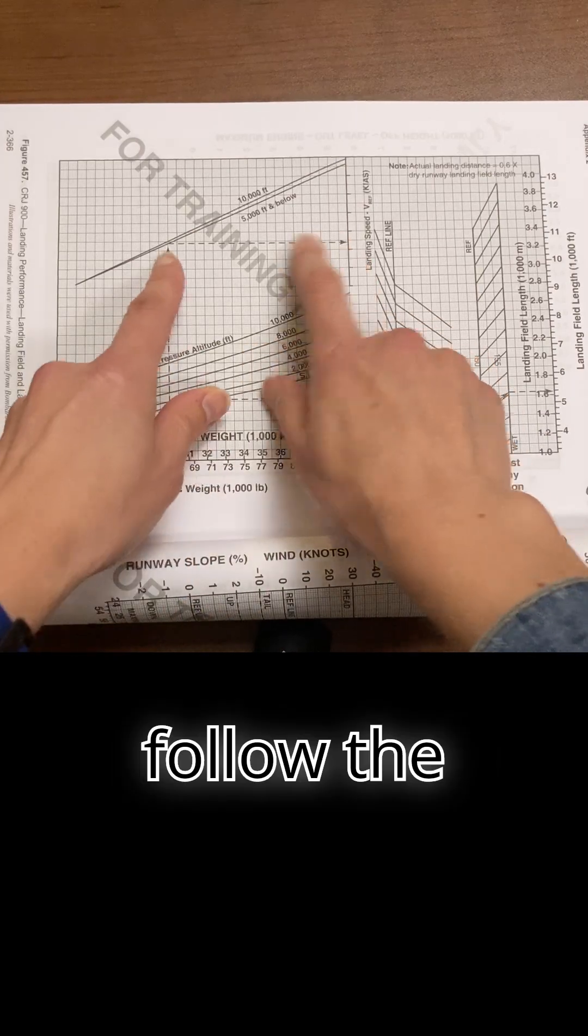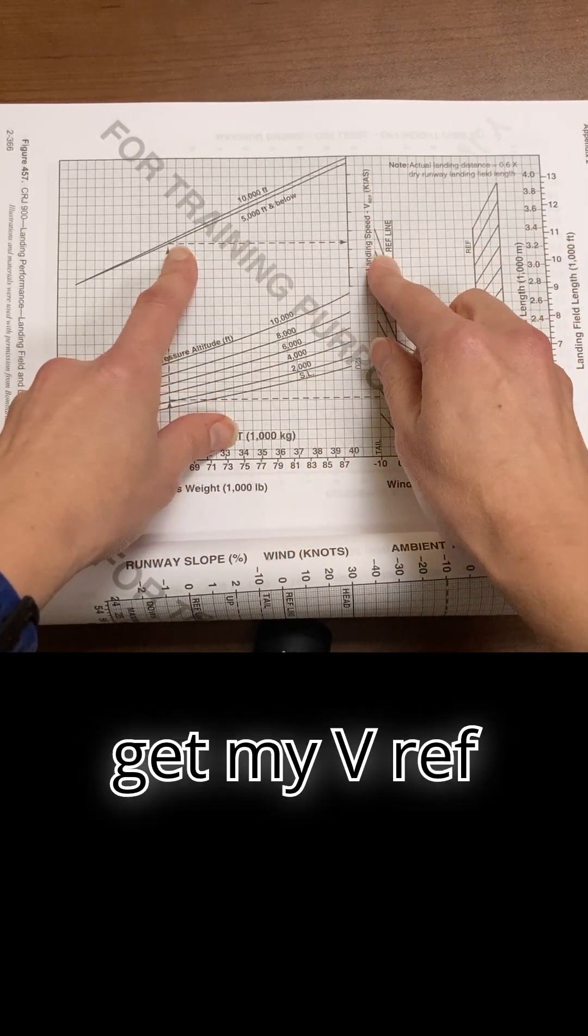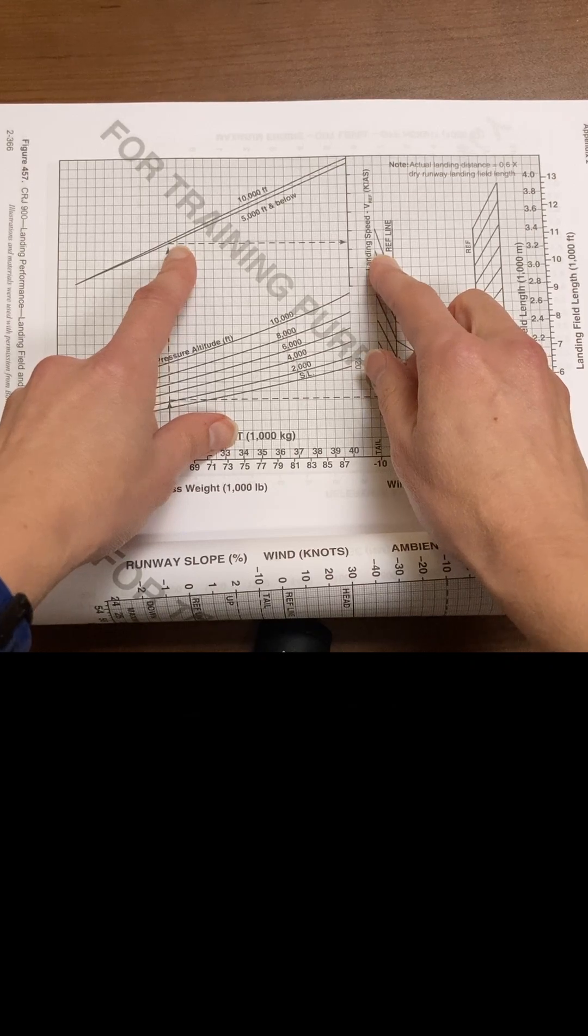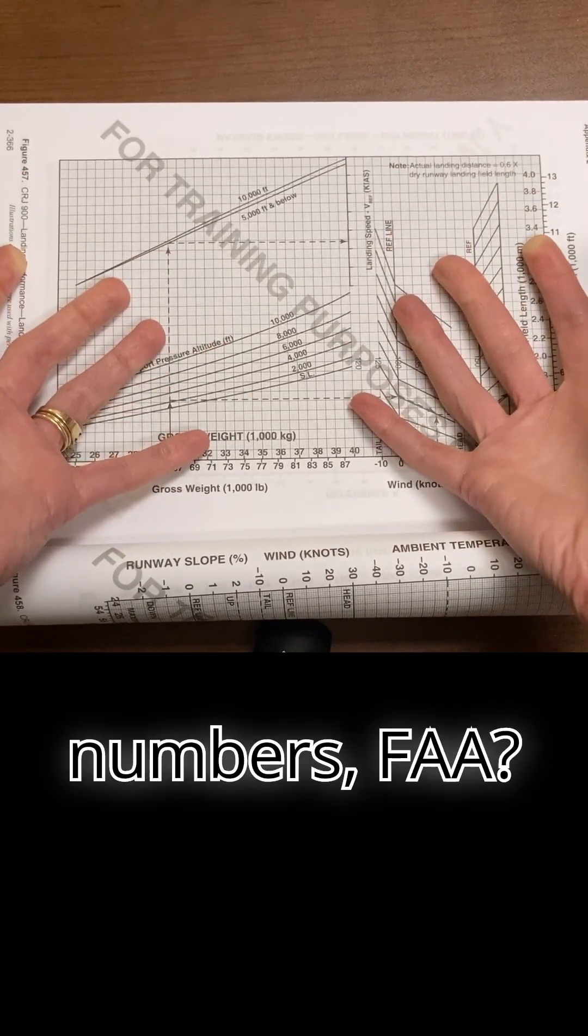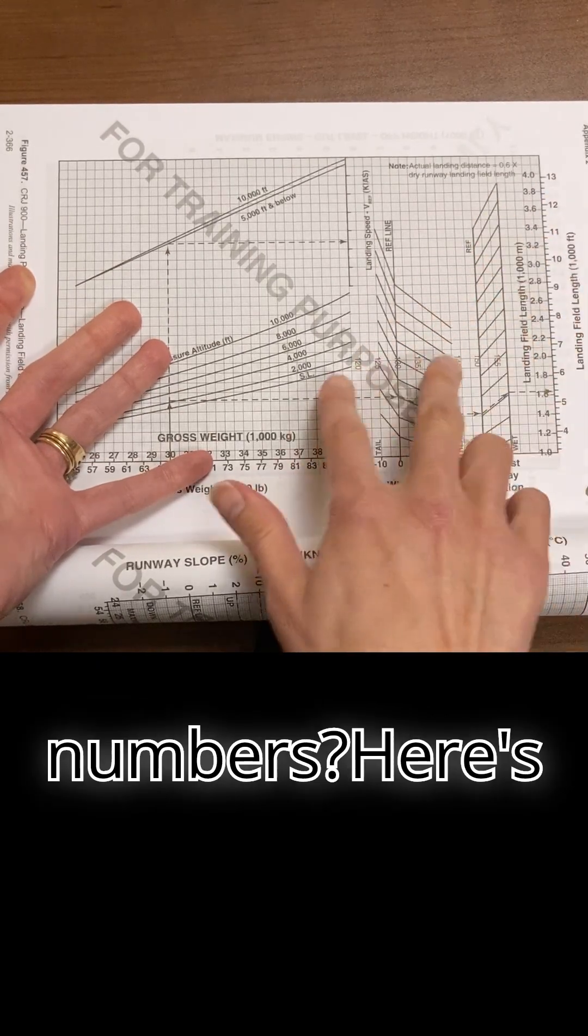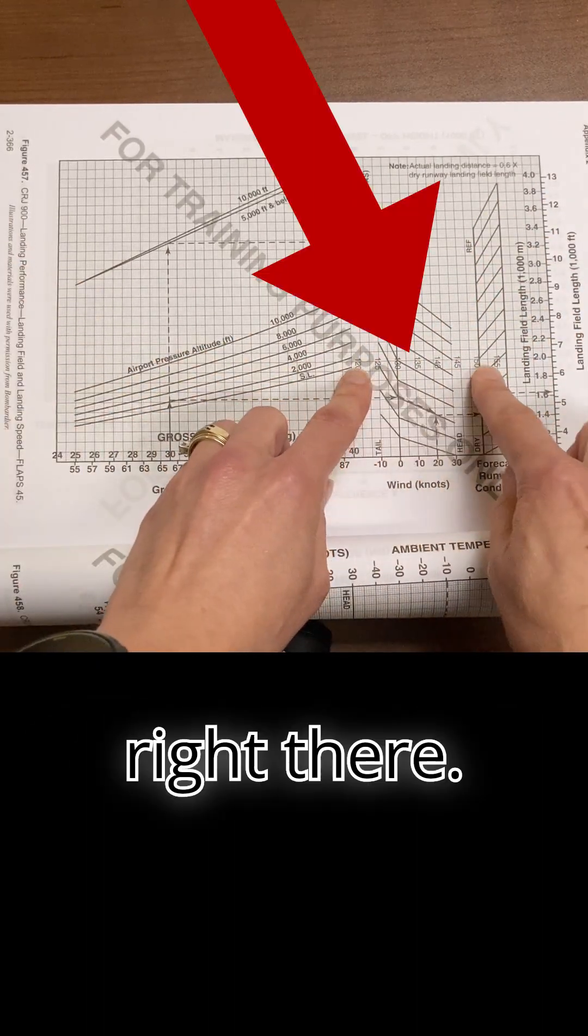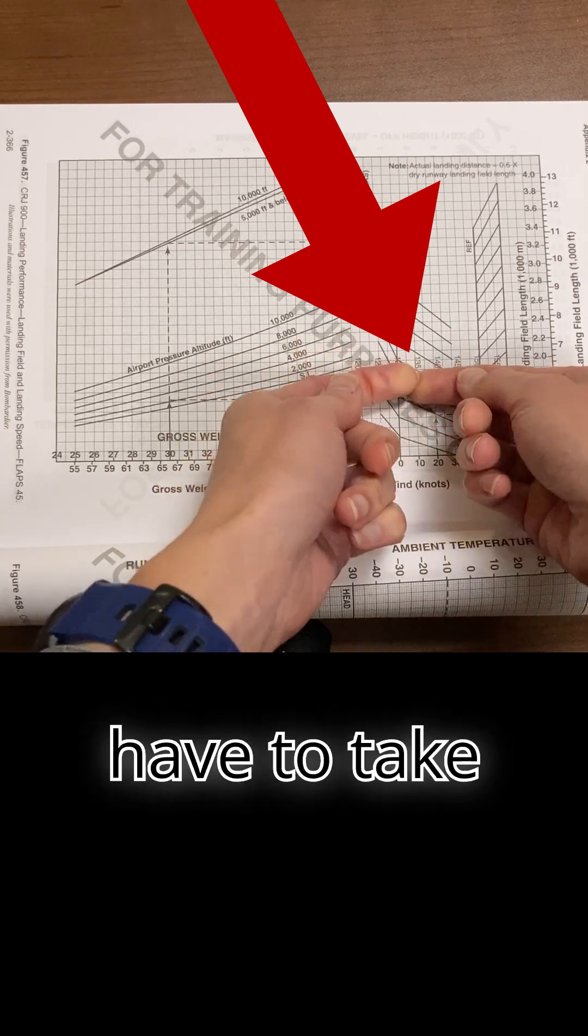No numbers here. Where are the numbers, FAA? Where are the numbers? Here's where the numbers are, right there. Crazy! You have to take this whole thing and basically superimpose it up here.